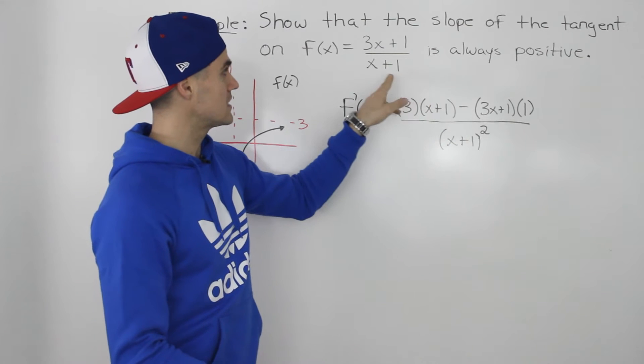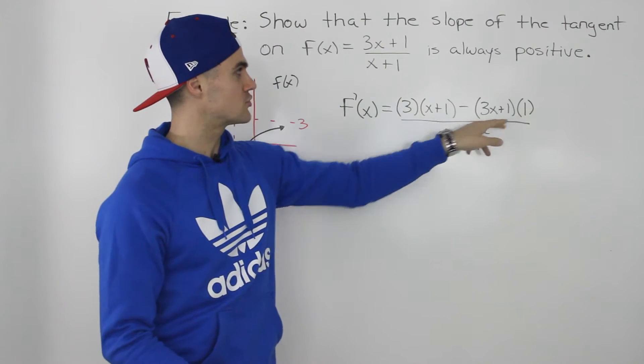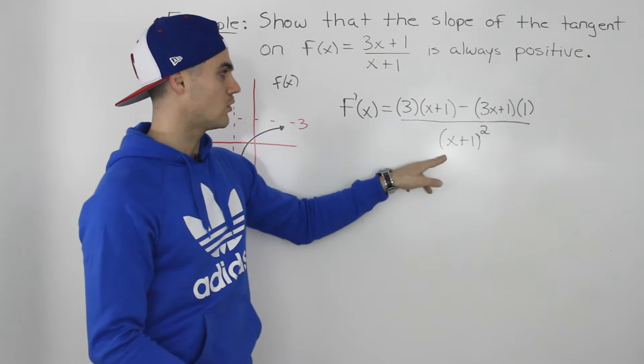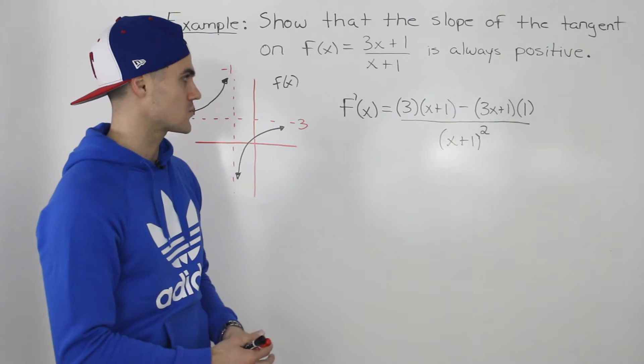minus the top function, 3x+1, times the derivative of the bottom function, which is just 1. And that's going to be all over (x+1) squared, that bottom function squared.